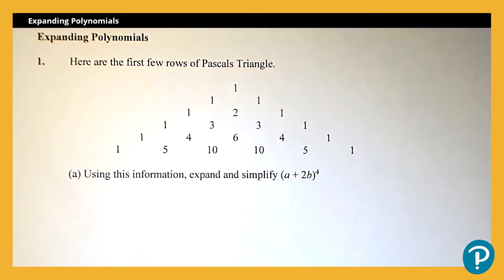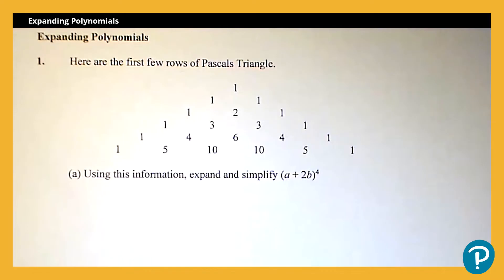Today we're going to be looking at expanding polynomials. At GCSE you're expected to expand polynomials with indices of two and three, but on this qualification we're going to go a little bit further. We're going to use something called Pascal's triangle. You're not expected to know or generate Pascal's triangle yourself — it will always be given to you, or the correct row will be provided.